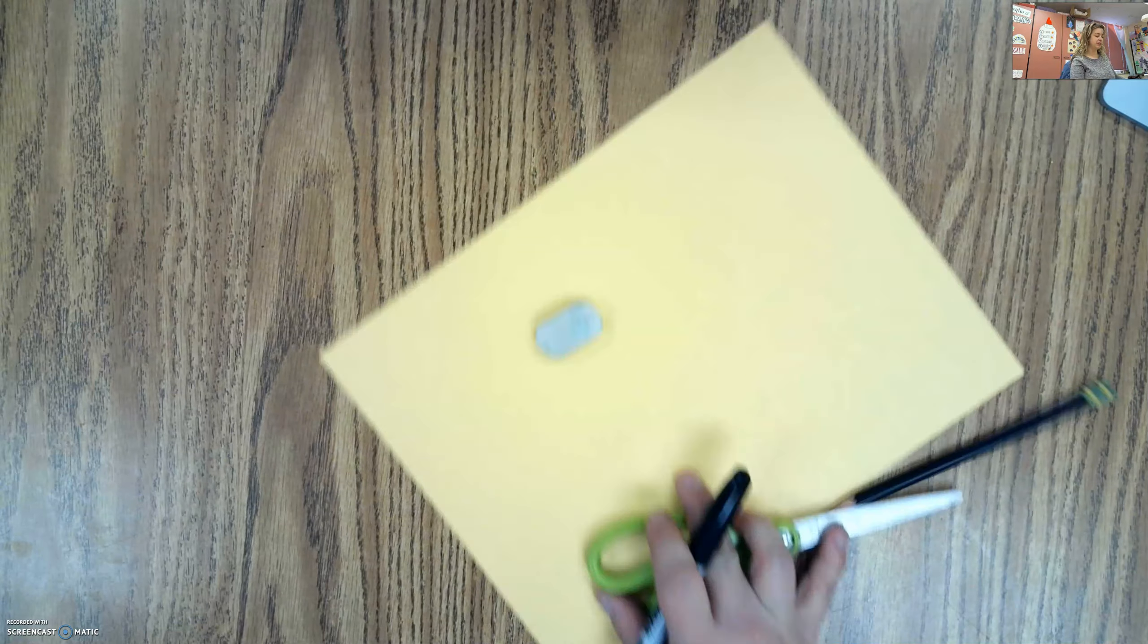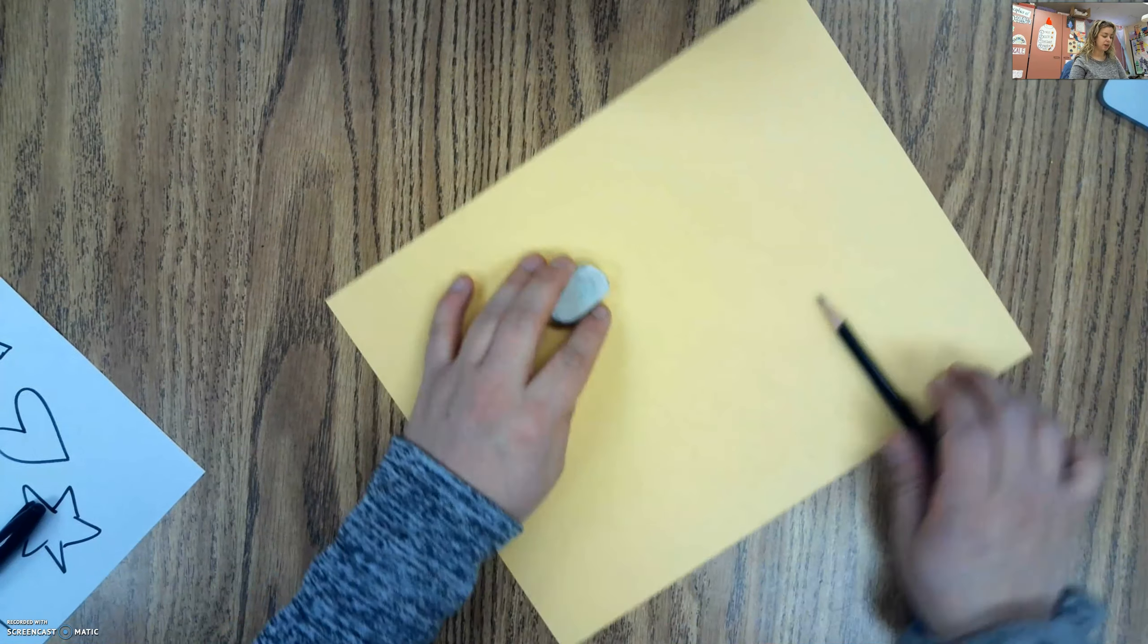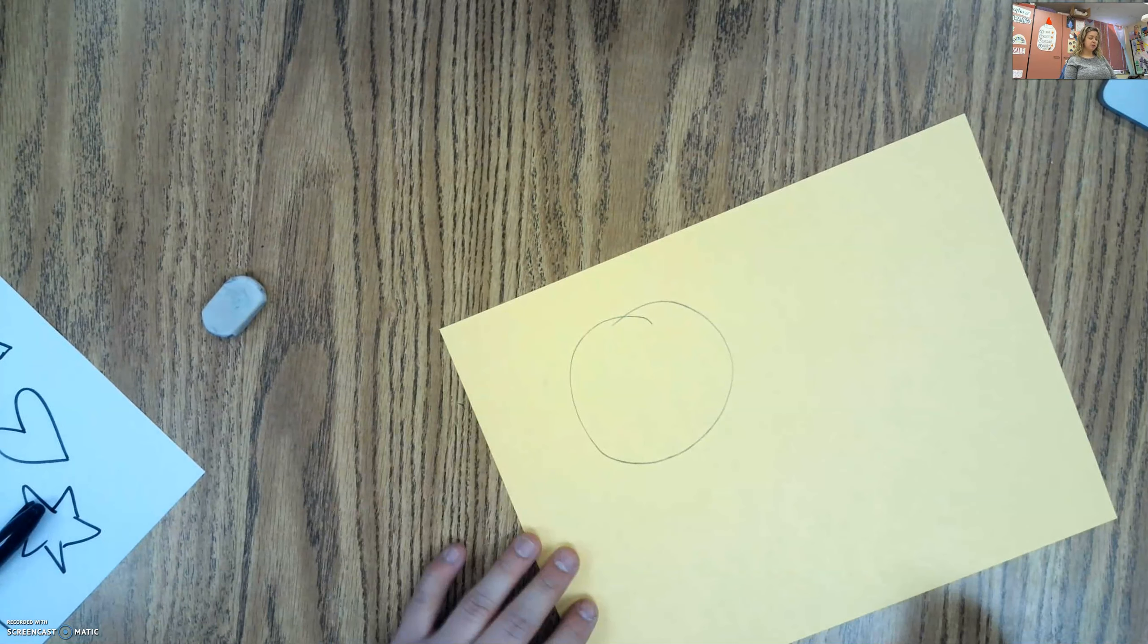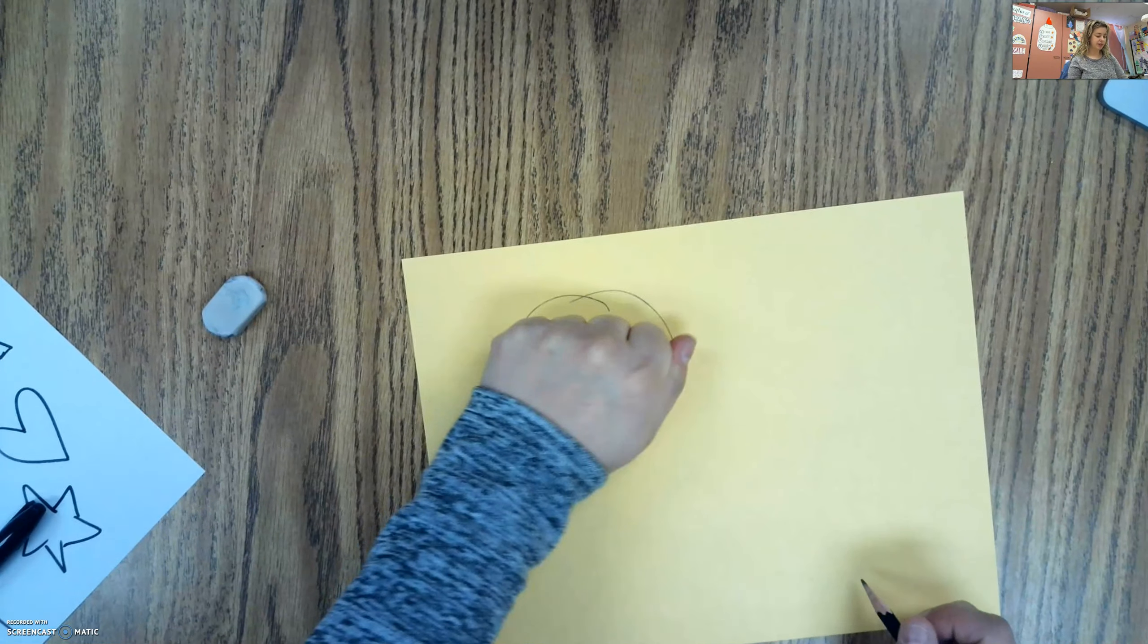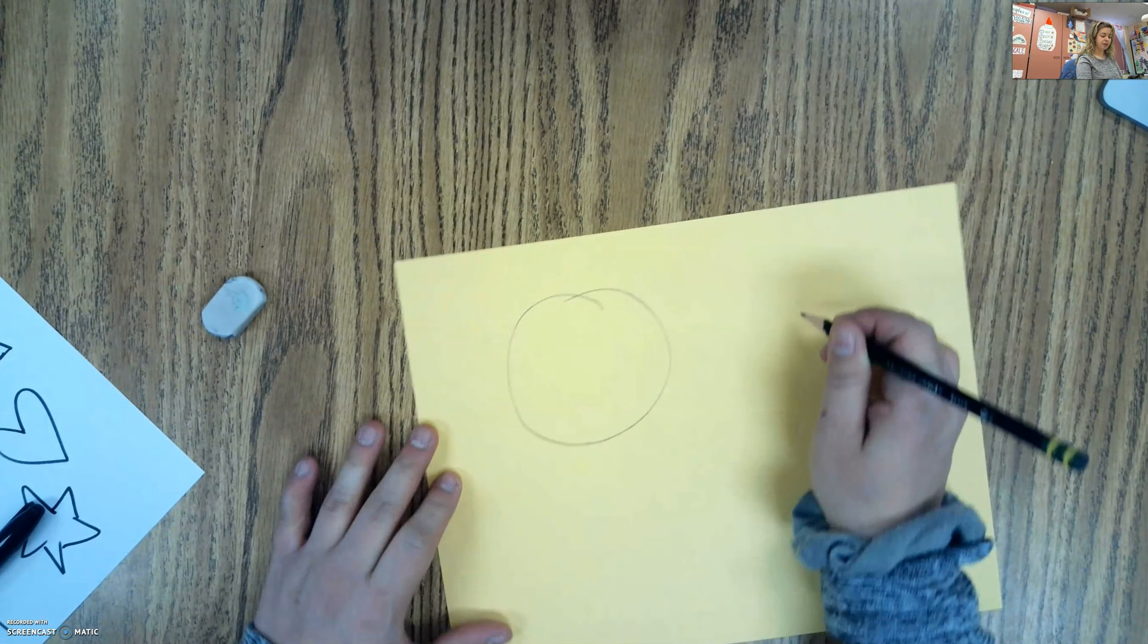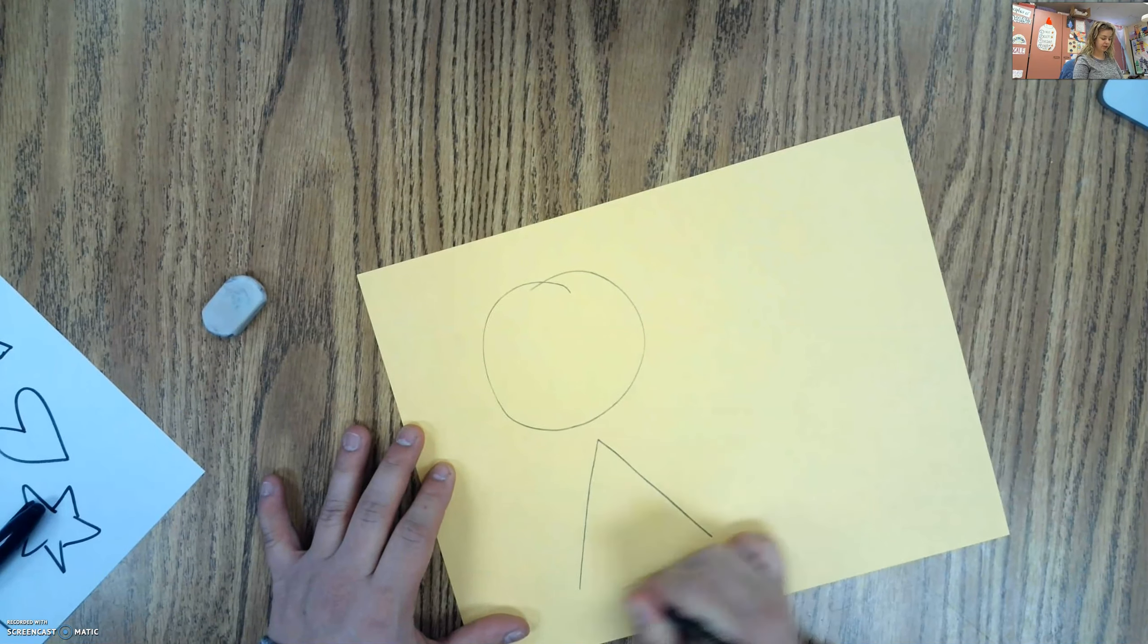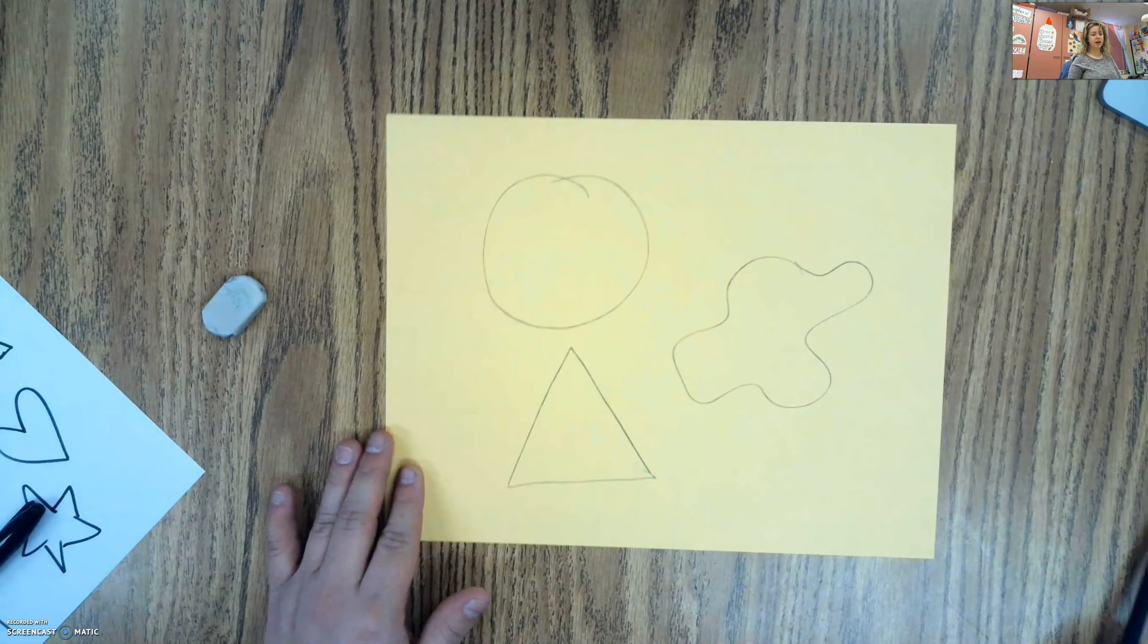So I'm going to set these aside and I'm going to choose three different shapes. I think I want to do a circle. And I'm going to make these shapes about the size of my fist. A circle. Let's do a triangle. And then let's do a wibbly wobbly organic shape like that.